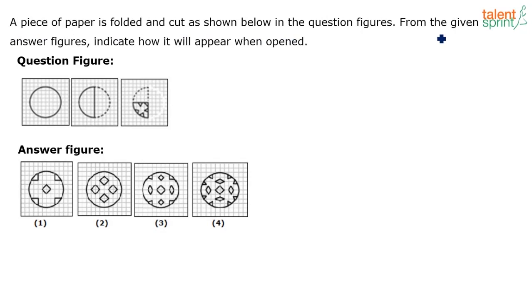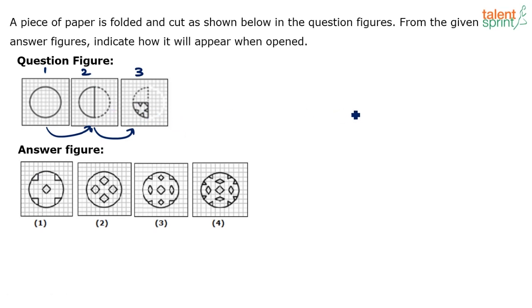Second question: a piece of paper is folded and cut as shown. There is a circular piece of paper which has been folded - figure 1 to figure 2 and figure 2 to figure 3. In the first transition, the right half of the paper is folded over the left half. In the second transition from 2 to 3, the top half is folded on the bottom half.